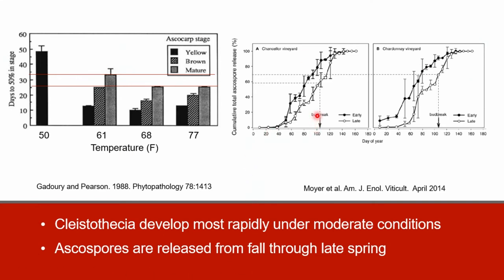On the graph, bud break for Chancellor is just over day 100 and the same for Chardonnay. Going up from bud break to the line with the closed circles — these are early-maturing Kleistothesia — you can see that they resulted in nearly 80 percent of the ascospores being released. Compared to those that matured later, you are only getting about 60 percent of spore release by the time of bud break, and the same trend is true for the Chardonnay variety.